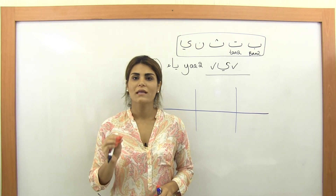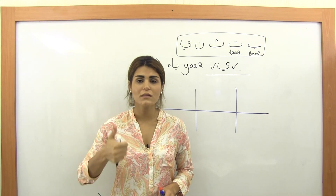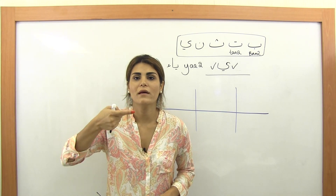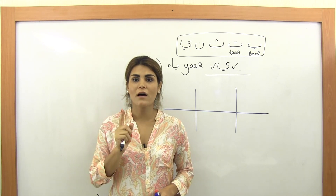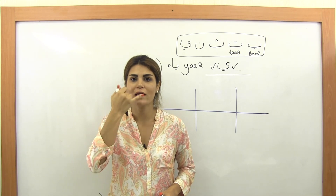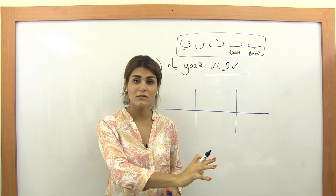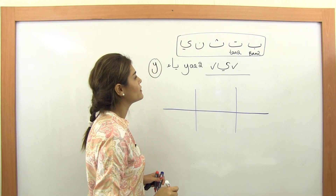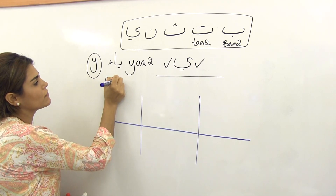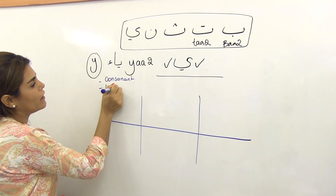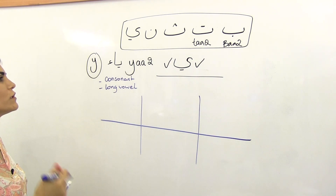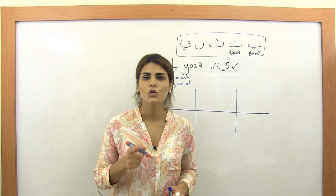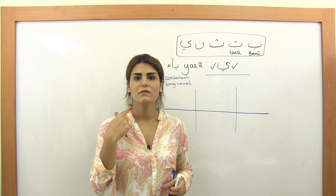Right now we are focusing on Ya as a consonant. In the second video we will learn Ya as a long vowel. To clarify: consonants are letters that are pronounced, while vowels are sounds — like 'p,' 'z' and similar are consonants that create the word structure. Vowels are sounds attached to them. Ya has two roles: consonant and long vowel. The long vowel we'll cover in its own lesson.